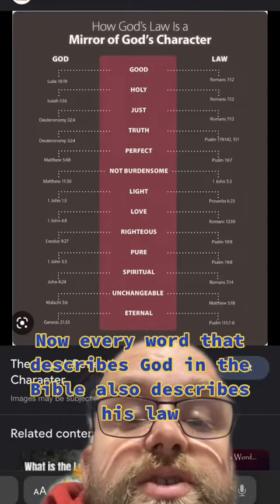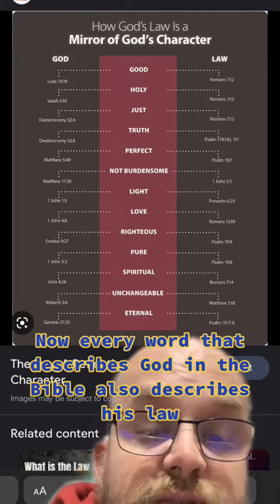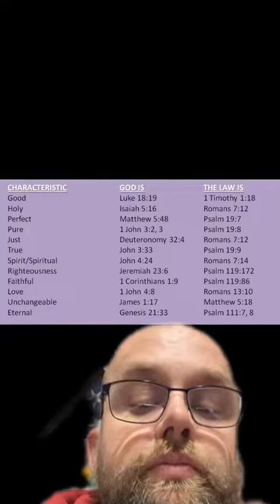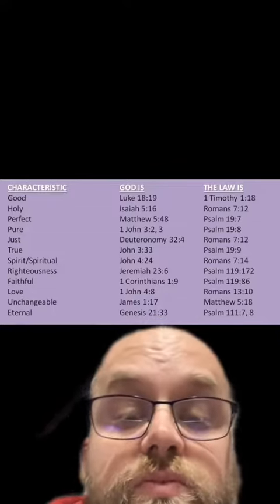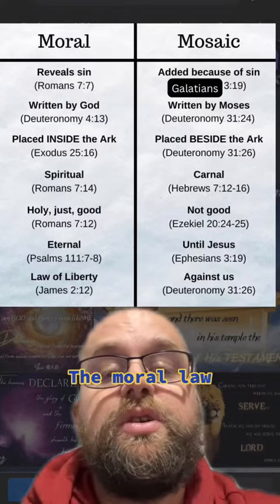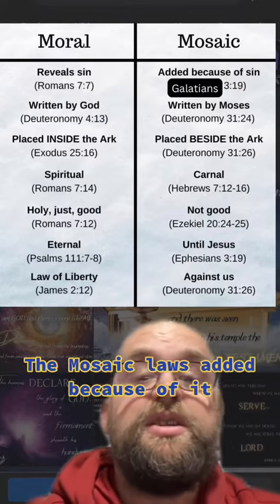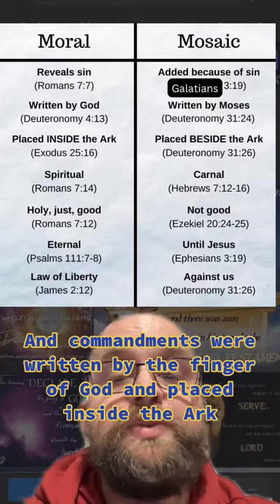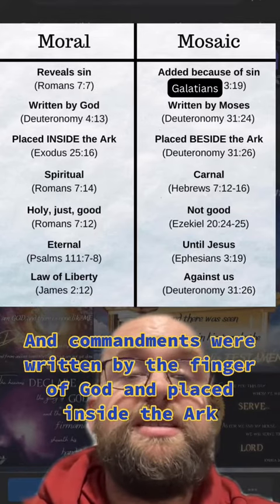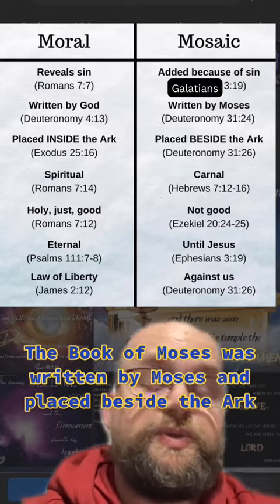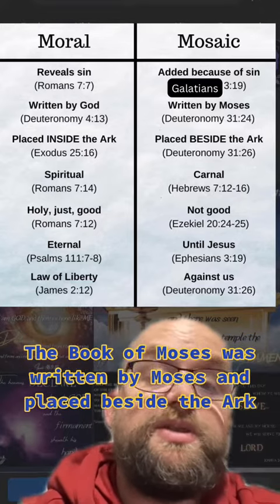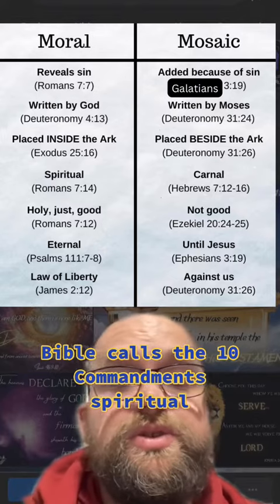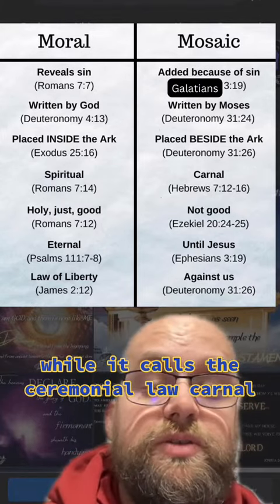Every word that describes God in the Bible also describes His law, and vice versa. As the Moral Law of the Ten Commandments reveals sin, the Mosaic Law is added because of it. The Commandments were written by the finger of God and placed inside the ark. The Book of Moses was written by Moses and placed beside the ark. The Bible calls the Ten Commandments spiritual, while it calls the Ceremonial Law carnal.